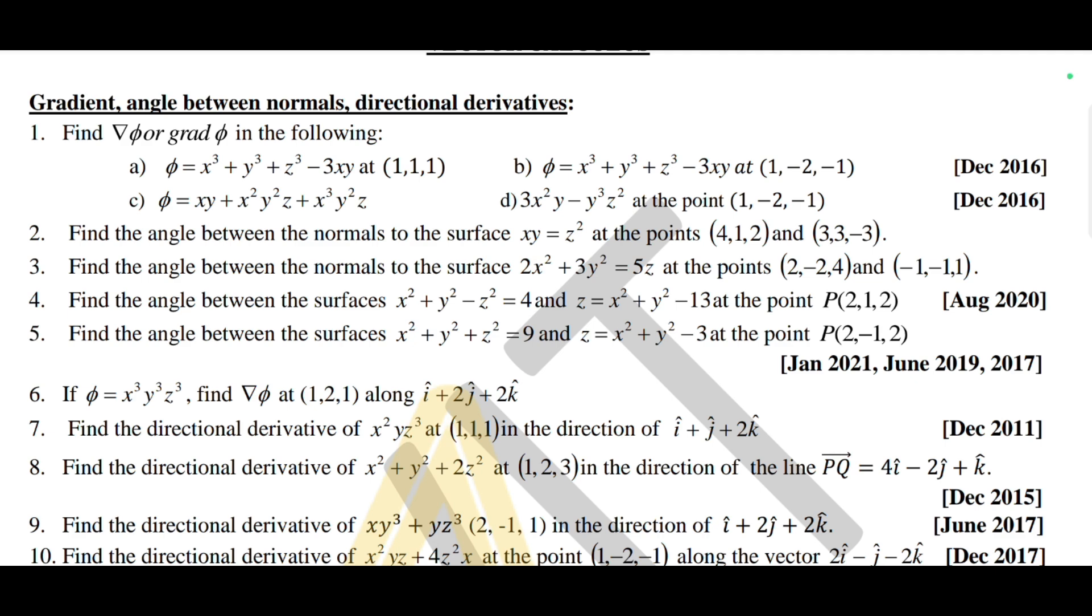First of all, if you can see here the first question 'find ∇φ or grad φ in the following', it has been repeated only in 2016. Similarly, August 2020, and then fifth question is repeated three times - Jan 2021, Jan 2019, and 2017.